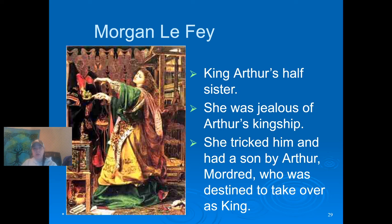Morgan Le Fay is popularly known as the Arthurian sorceress. She's known as a fairy, a priestess, a dark magician, an enchantress, a witch, a sea goddess, a shapeshifter, and a healer. She's the daughter of Igraine and Gorlois, the half-sister to King Arthur, and mother of Mordred. Morgan Le Fay was first introduced into Arthurian legend by Geoffrey of Monmouth, and her true origin, as with many Arthurian characters, leads back into Celtic mythology and inevitably develops with each new tale.